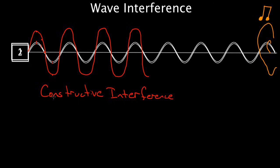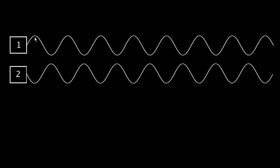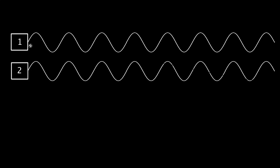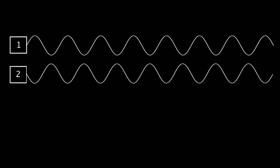What's a little bit harder to understand is you can also have something called destructive interference. Imagine you had two speakers where the peak of the first one lined up not with the peak of the second one, but with the valley of the second one, and the valley of the first one lined up with the peak of the second one. These are out of phase. Before, when they looked identical with peaks matching peaks and valleys matching valleys, those waves were in phase. These are out of phase — specifically, 180 degrees out of phase.